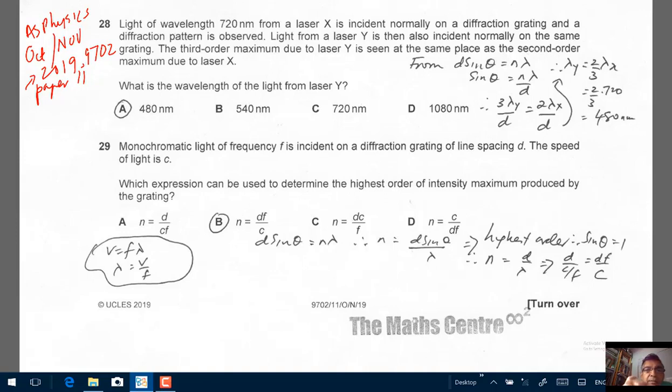Okay, light of wavelength 720 nanometer from a laser X is incident normally on a diffraction grating and the diffraction pattern is observed. Light from a laser Y, so just now it's X, now it's Y, is then also incident normally on the same grating.